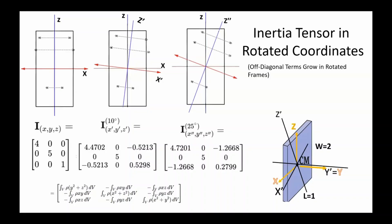Here's a question to check your understanding — let me know the answer in the comments section. If we rotate the axes by 90 degrees, would the tensor become diagonal again? What would its entries be?